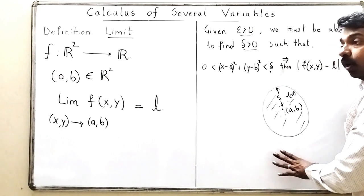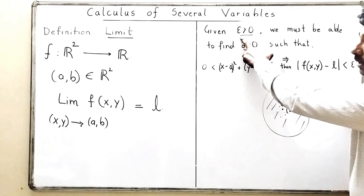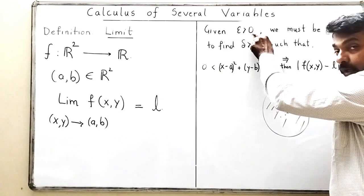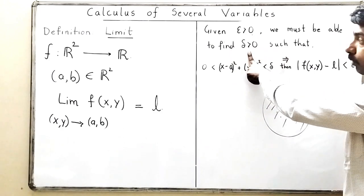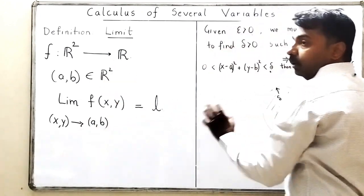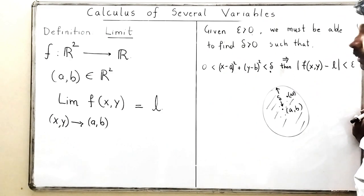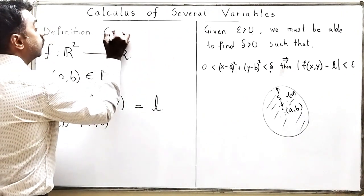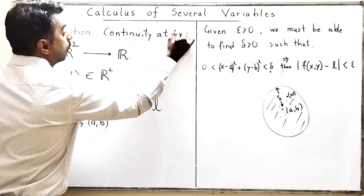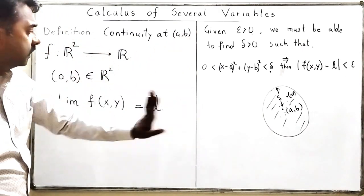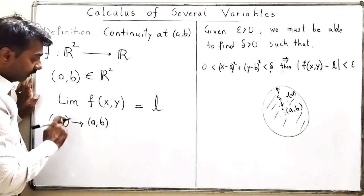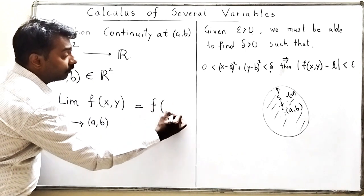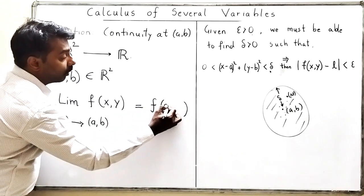This is the analytical definition of limit. In the next lecture we will solve problems where epsilon is given and the limit is also given, and you need to find an appropriate delta. If you can do that, it means the limit of f(x, y) equals L. Now, instead of limit, I want to discuss continuity at the point (a, b). For continuity, the limit of the function must equal the value of the function.